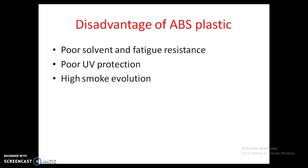Some disadvantages: it has poor solvent and fatigue resistance — when we continually apply a load on ABS plastic material, it gets failed at a lower level. It has poor UV protection and high smoke evolution. It is not of a toxic nature, it is relatively harmless. One drawback is that its melting point is very low — above 105 degrees Celsius it gets melt and converts into a liquid form.